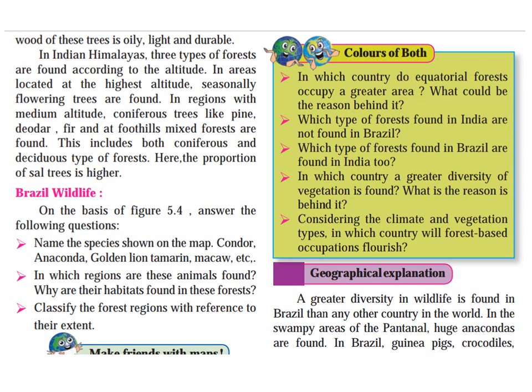Equatorial forest is in the northern and western region of Brazil. Savanna grassland is in the central part. If you go to the south, there is temperate grassland. In the east of Brazil, we have thorny shrubs. A great wildlife diversity is found in Brazil, more than any other country in the world.